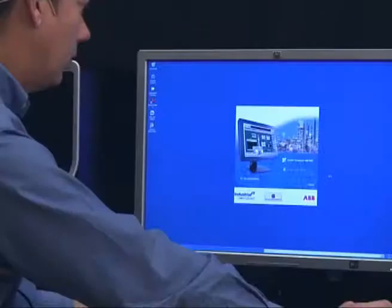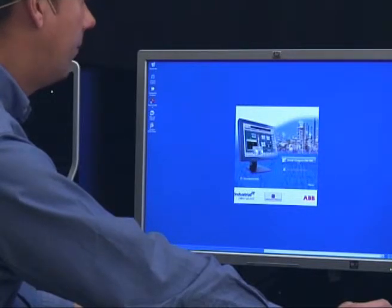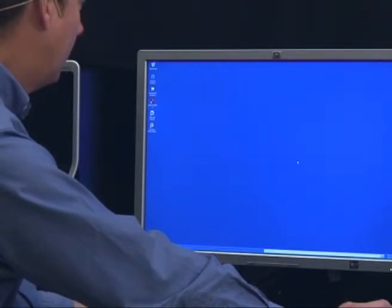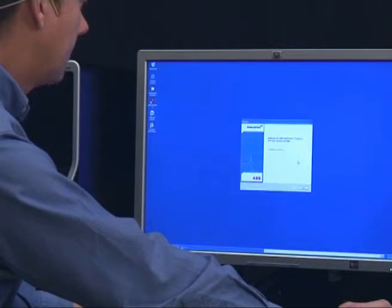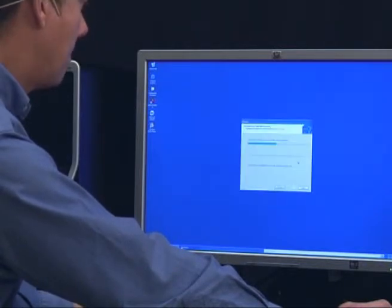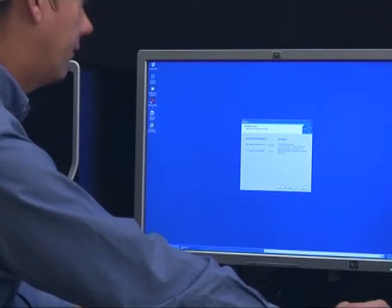So what we do is we select install compact HMI. Then we select compact HMI server as this is the first node that we are installing in the compact HMI system. We press next.